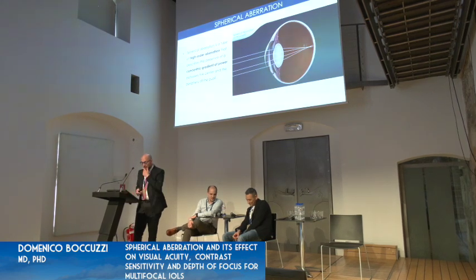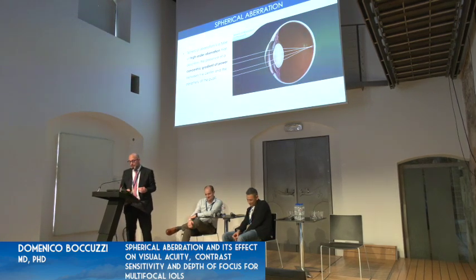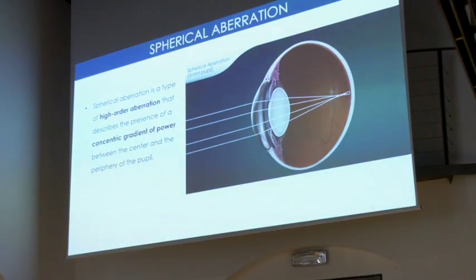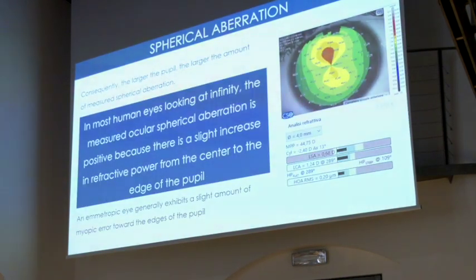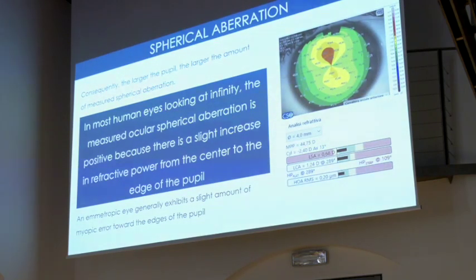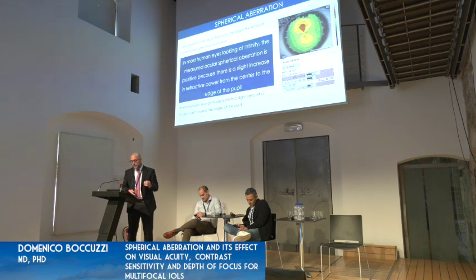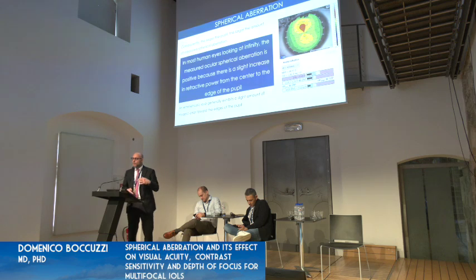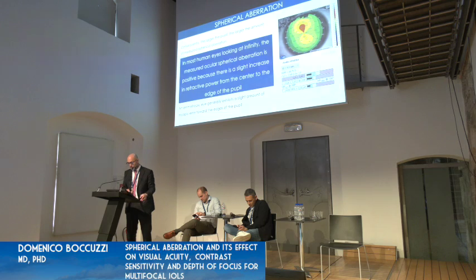When we talk about spherical aberration, we have to know that it's a high-order aberration that describes the presence of a concentric gradient of power between the center and the periphery of the pupil. The larger the pupil, the larger the amount of measured spherical aberration. In most human eyes looking at infinity, the measured spherical aberration is slightly positive, which means that when the pupil dilates, we have a slight myopic shift.